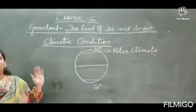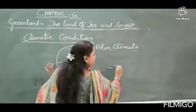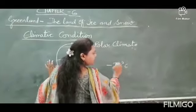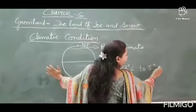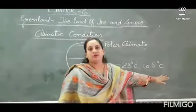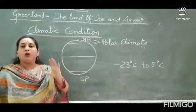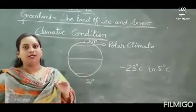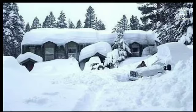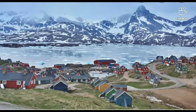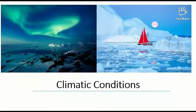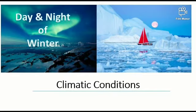The temperature of Greenland lies between minus 23 degrees Celsius to 5 degrees Celsius. The winter season lasts for about 9 months and the summer season is just 3 months. The sun is not visible for many weeks during winter, and day and nights are the same. Very cold winds blow during the winter season and the temperature is always below the freezing point with heavy snowfall.